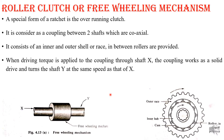In this overrunning clutch, it consists of an outer shell or outer race. In between, rollers are provided. There is an outer shell and inner shell, and in between them we have rollers. On the outer part of the inner shell, we have the tapered cam. These are the constituents of this roller clutch.